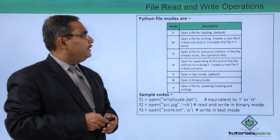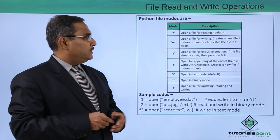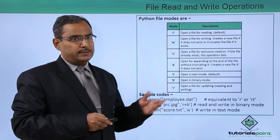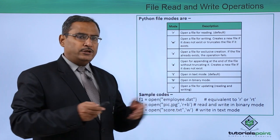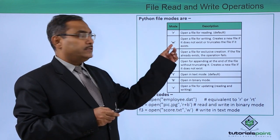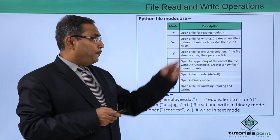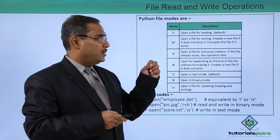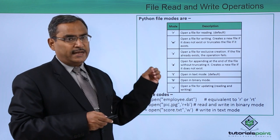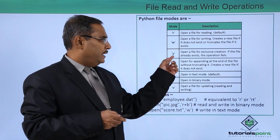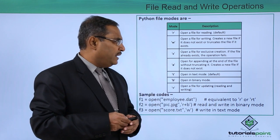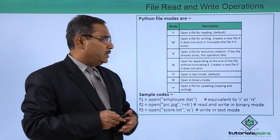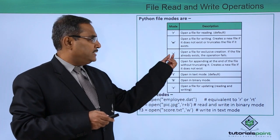These are the Python file modes. First is R — open a file for reading; this is the default. If you do not mention R, the file will open in R mode, that is read mode. W — open a file for writing; creates a new file if it does not exist or truncates the file if it already exists. X — open a file for exclusive creation; if the file already exists, the operation fails.